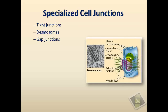Desmosomes anchor one cell to another through special proteins in their membranes. There are different proteins involved: some form discs, and others link or anchor one disc to the other. These discs are connected to intermediate filaments from the cytoskeletal proteins of the cells, anchoring cells together. Desmosomes are found, for example, in skin tissue, making it very firm and difficult to separate cells from each other.